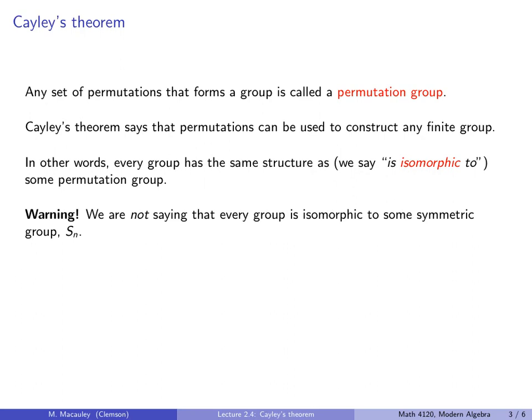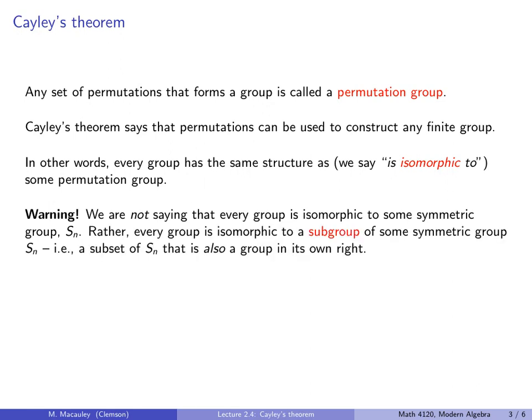Warning, we are not saying that every group is isomorphic to some symmetric group Sn. That's not at all what we're saying, because we've seen groups like D8 that have size 8, and 8 is not n factorial for any n. Rather, every group is isomorphic to a subgroup of some symmetric group Sn, i.e. a subset of Sn that is also a group in its own right. Now the topic of subgroups is something that we're going to study very shortly.